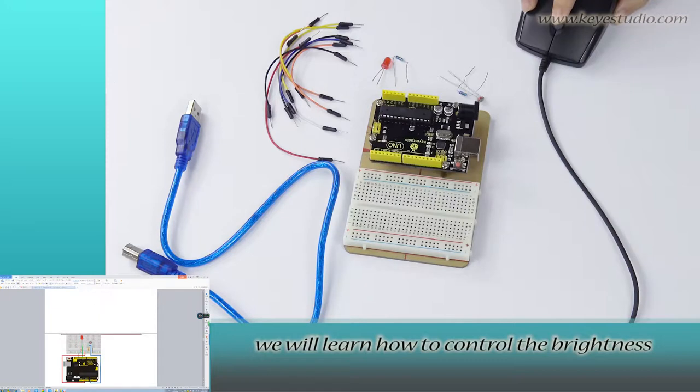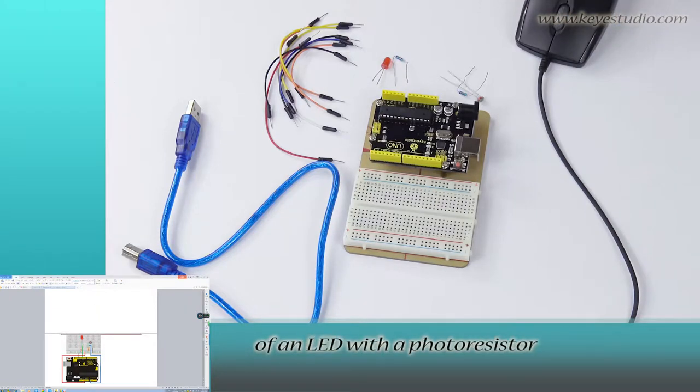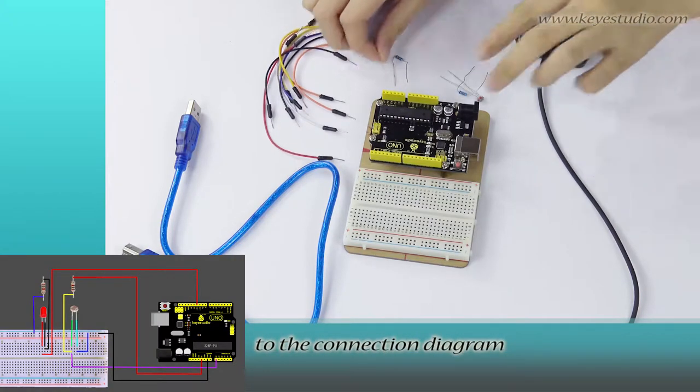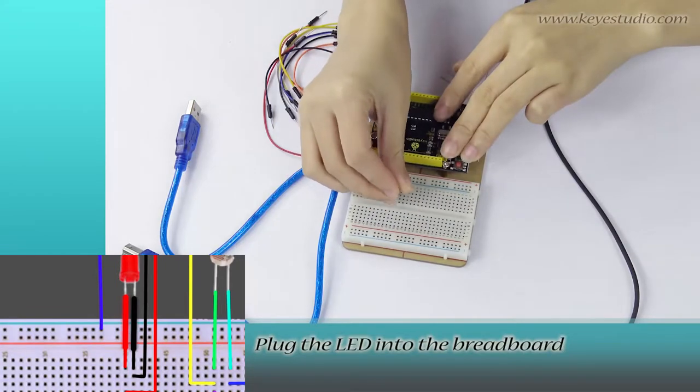In this lesson, we will learn how to control the brightness of an LED with a photoresistor. First, let's do the wire connection according to the connection diagram. Plug the LED to the breadboard.